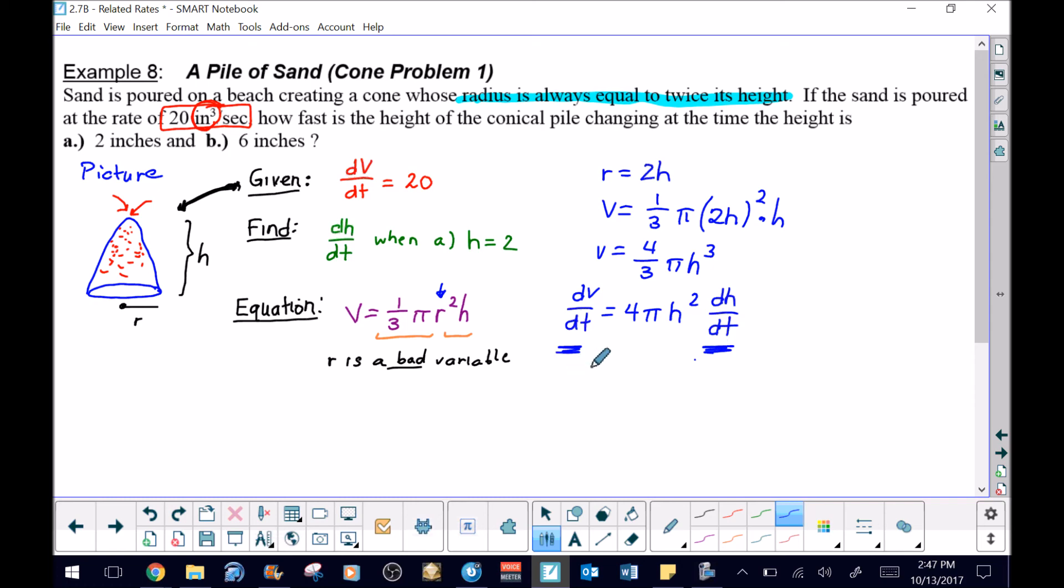Now we know that the dv/dt is 20 from the given, and we know that our h is 2 from what part A is asking us to do. So I will say part A, and then the dh/dt is going to be what we are looking for.